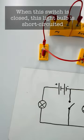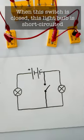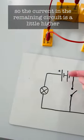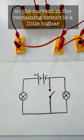When this switch is closed, this light bulb is short-circuited, so the current in the remaining circuit is a little higher.